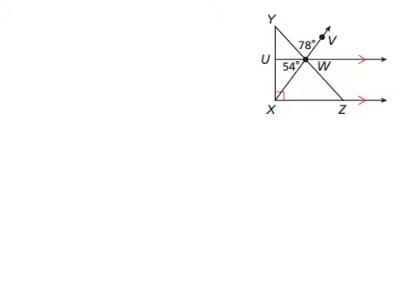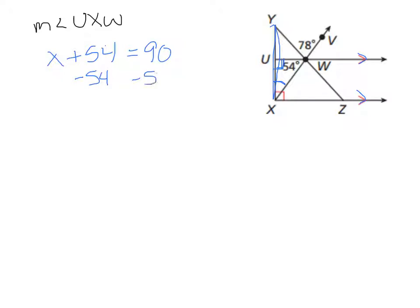For this image we had many things to find. The first was the measure of angle UXW, which is that little angle right there. I see that I have a pair of parallel lines and I also know that this line is perpendicular, which means that little angle is a right angle. By the acute angle corollary, when I have a right triangle, the other two angles add up to 90 because they're complementary. So the angle I'm looking for plus the other acute angle, which is 54, should add up to 90. Subtracting 54 from both sides gives us our missing angle of 36 degrees.